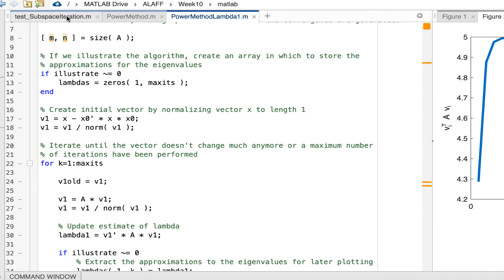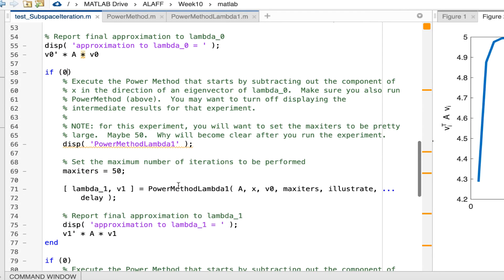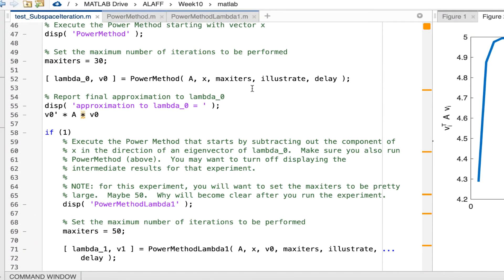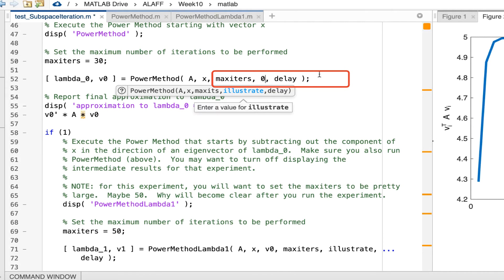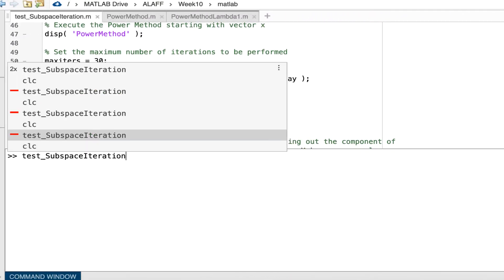Now to test this, we need to go to test subspaces and uncomment the section that calls this power method lambda 1 by setting the 0 to 1. We still need to run the power method because we need a vector associated with lambda 0, but we don't necessarily want all the reporting along the way. So let's set illustrate equal to 0 so that we don't get the graphs or intermediate results. If I now execute test subspace iteration, it'll very quickly run the power method and then start reporting on this method.